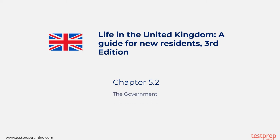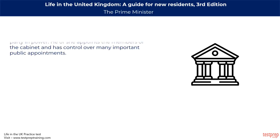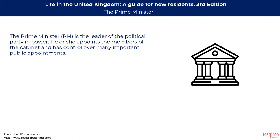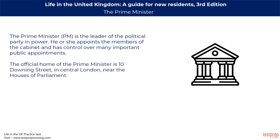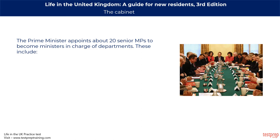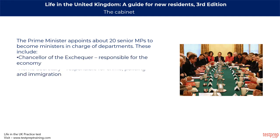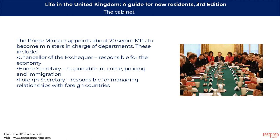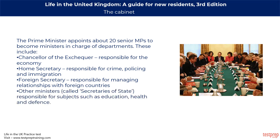The Prime Minister is the leader of the political party in power, appoints members of the Cabinet, and has control over many important public appointments. The official home of the Prime Minister is 10 Downing Street in central London, near the Houses of Parliament, and they also have a country house outside London called Chequers. The Prime Minister appoints about 20 senior MPs to become ministers in charge of departments, including the Chancellor of the Exchequer responsible for the economy, the Home Secretary responsible for crime, policing and immigration, the Foreign Secretary responsible for managing relationships with foreign countries, and other Secretaries of State responsible for education, health and defense.